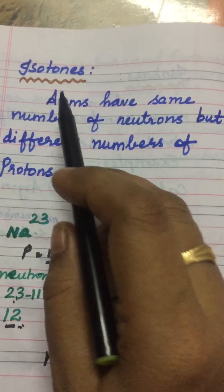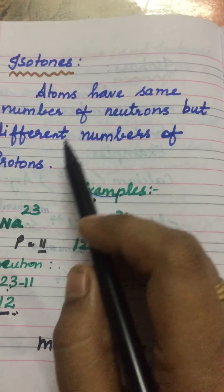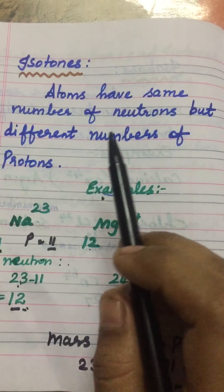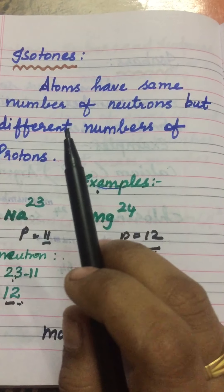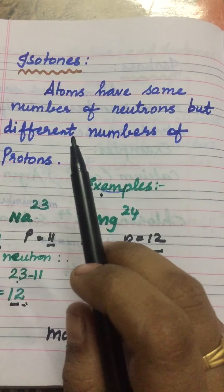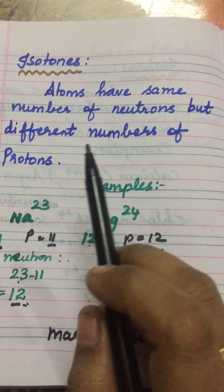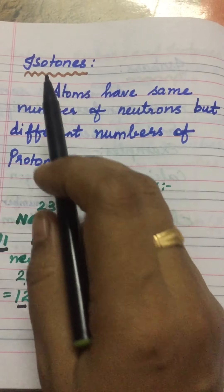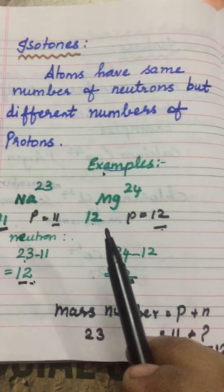Students, now we will learn the topic isotones. What is isotones? If two different elements have the same neutron value but different proton values, it is called isotones.